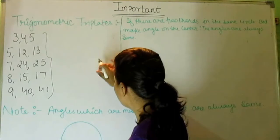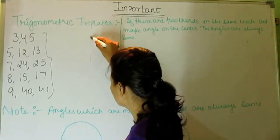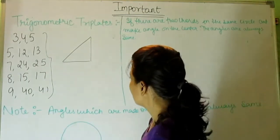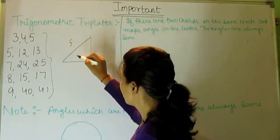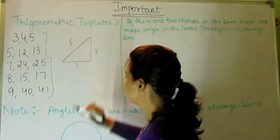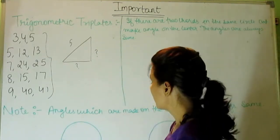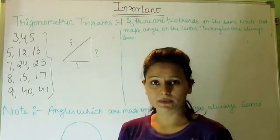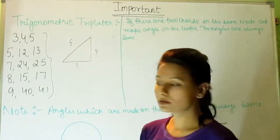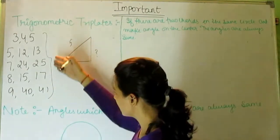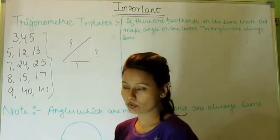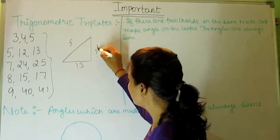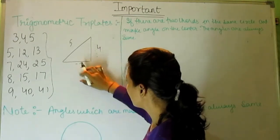Let's suppose we have this triangle and we have been given this side as five, and we have to find out these two sides. We just have to learn these triplets. Since the hypotenuse is five, this side will be three and this side will be four.